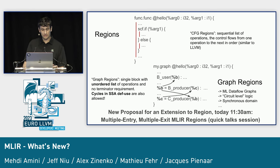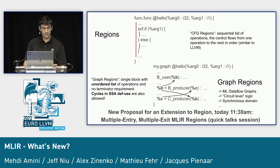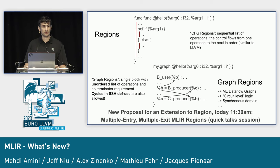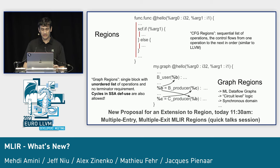Something new in MLIR is a new kind of region called graph regions. They contain a single block, but contrary to regular regions there is no ordering — operations can be in any order and don't imply any control of execution flowing from one to the next. You can also have SSA value cycles directly in the SSA graph, so it's no longer a DAG. This is useful for machine learning dataflow graphs, circuit-level logic, and synchronous domain representations. There's also a new proposal for multiple-entry multiple-exit MLIR regions.